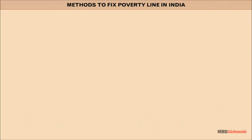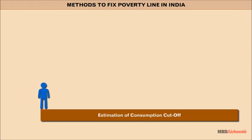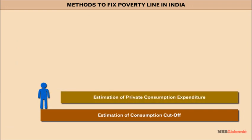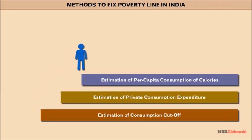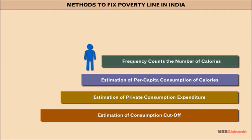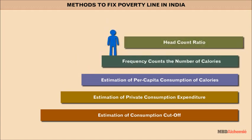Methods to fix the poverty line in India include estimation of consumption cutoff, private consumption expenditure, per capita consumption of calories, and frequency counts — the number of calories count ratio.